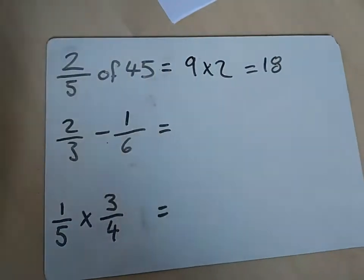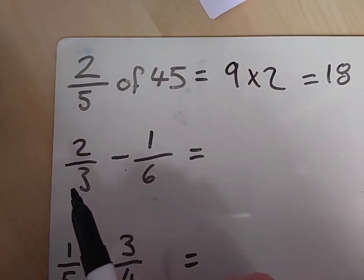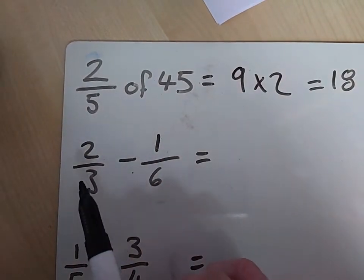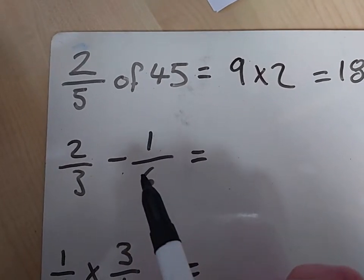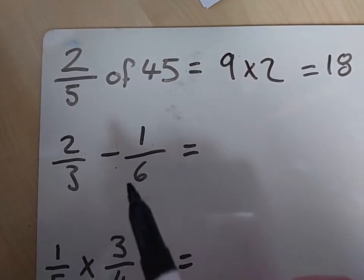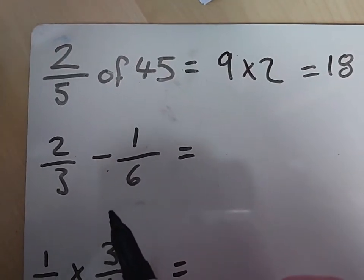When you're adding and taking away fractions, remember that the first thing you have to do is make sure the bottom number is the same. So when you get a question like this, which is 2 thirds minus 1 sixth, the first thing you've got to think is, right, I've got to change this first.